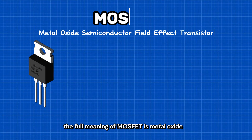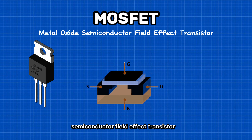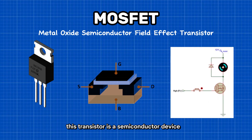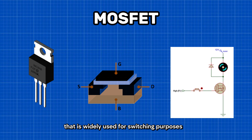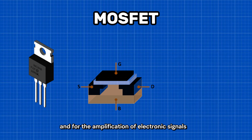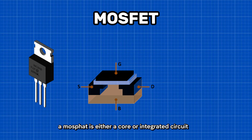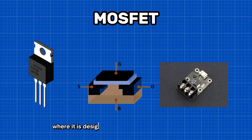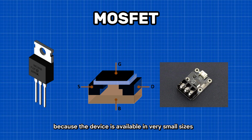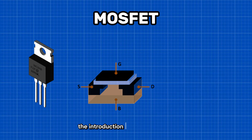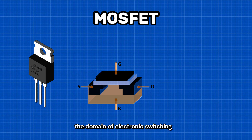The full meaning of MOSFET is Metal Oxide Semiconductor Field Effect Transistor. This transistor is a semiconductor device that is widely used for switching purposes and for the amplification of electronic signals in electronic devices. A MOSFET is either a core or integrated circuit where it is designed and fabricated in a single chip because the device is available in very small sizes. The introduction of the MOSFET device has brought about a change in the domain of electronic switching.